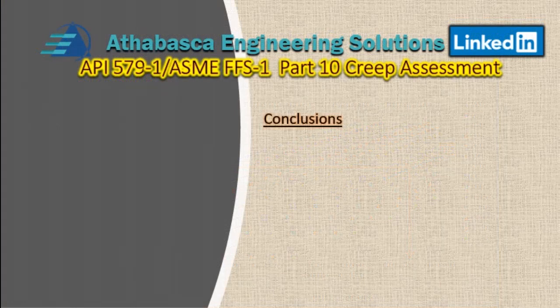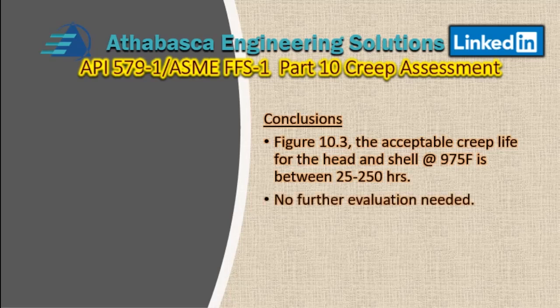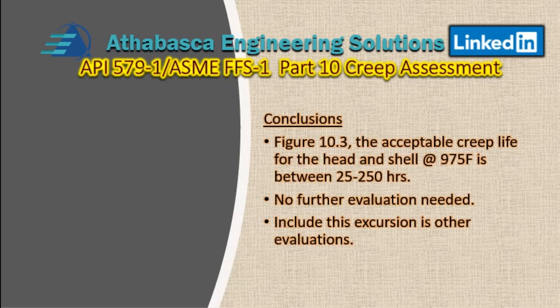The last step is the conclusions. From Figure 10.3 — the damage curves — we have an acceptable creep life for the head and shell components at 975°F, which included the extra allowance for the direction of stress on the welds. The unit could be operated for somewhere between 25 and 2,500 hours without an issue. We knew there were only 20 hours of operation, so there's no need for further evaluation. Bear in mind that this study must be included in any other deviations to the process as part of the operating history of the equipment.